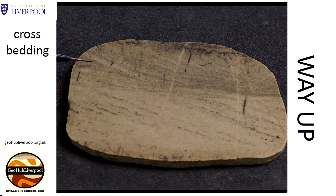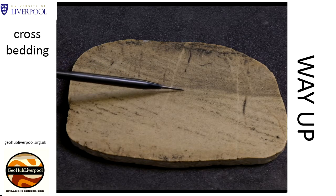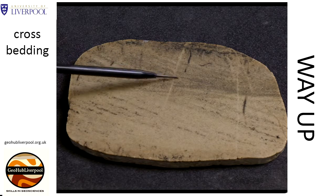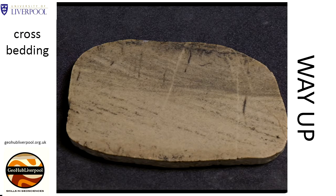Here a new dune has advanced and truncated, or cut off, the top of the previous one. The second set of cross bedding is again sloping at an angle of about 20 degrees and the layers are gently curved.